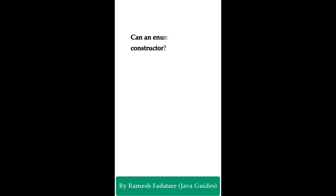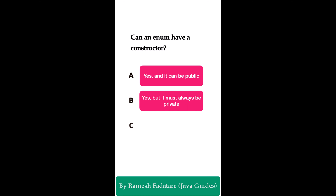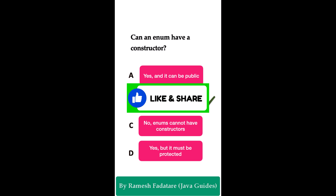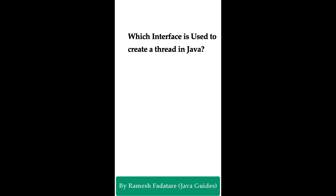Can an enum have a constructor? Option A: yes, it can be public. Option B: yes, but it must always be private. Option C: no, enums cannot have constructors. Option D: yes, but it must be protected. The correct answer is option B — yes, but it must always be private. Enums can have constructors, but they are always private. This prevents the creation of new enum instances. Remember: enum constructors are always private to prevent creation of new enum instances.